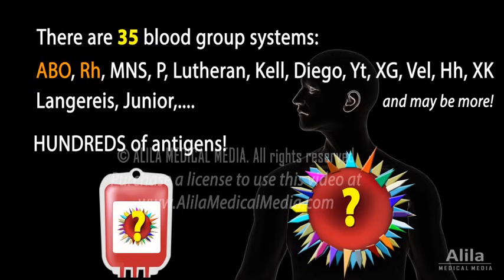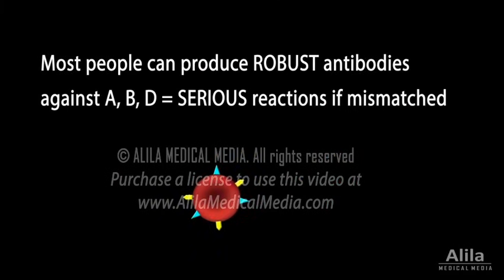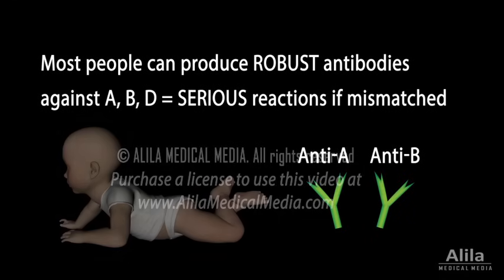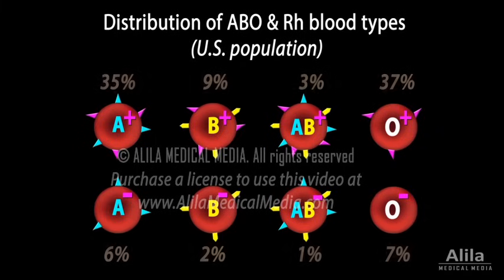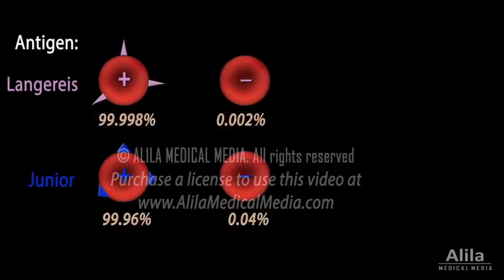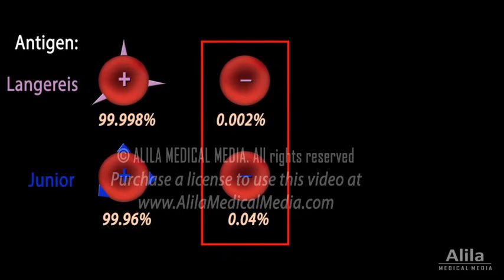In reality, however, most people only need to care about their ABO type and Rh factor. The ABO and Rh systems are the most important in blood transfusion for two reasons. First, most people can produce robust antibodies against AB and D antigens, which may not be the case for other antigens. In fact, anti-A and anti-B antibodies are usually developed during the first year of life. Second, the eight basic blood types are distributed in comparable proportions that makes mismatching a likely event. Most other antigens occur at such frequencies that only a very small subset of patients is potentially at risk.